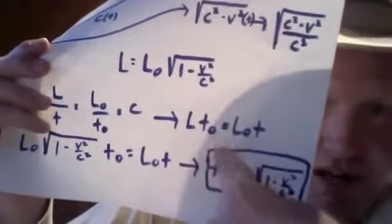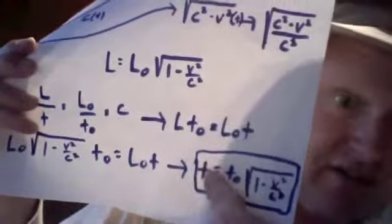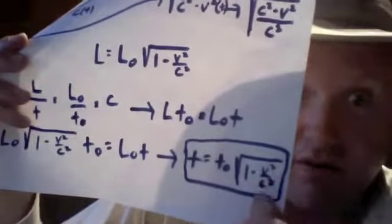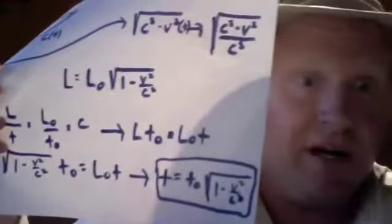Cancel out the L sub O and that's equal to T, and that gets us T is equal to T sub O times the square root of 1 minus V squared over C squared. And that's the formula for time dilation.